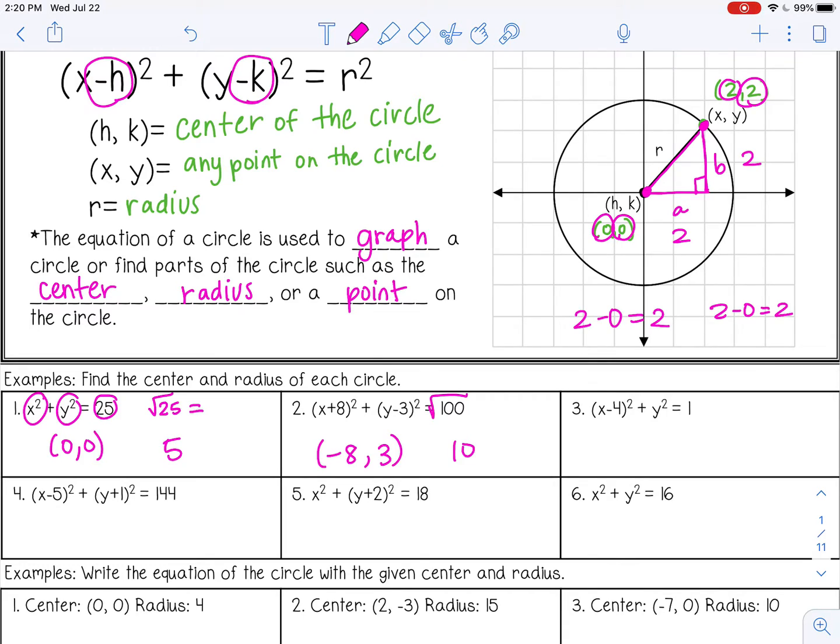All right, and then in number 3, my center would be—let's see, I'm going to change that sign to positive 4. Here I don't have a number, so it's going to be (4,0). And then the square root of 1 means my radius is 1. Pause the video and try 4, 5, and 6 by yourself.